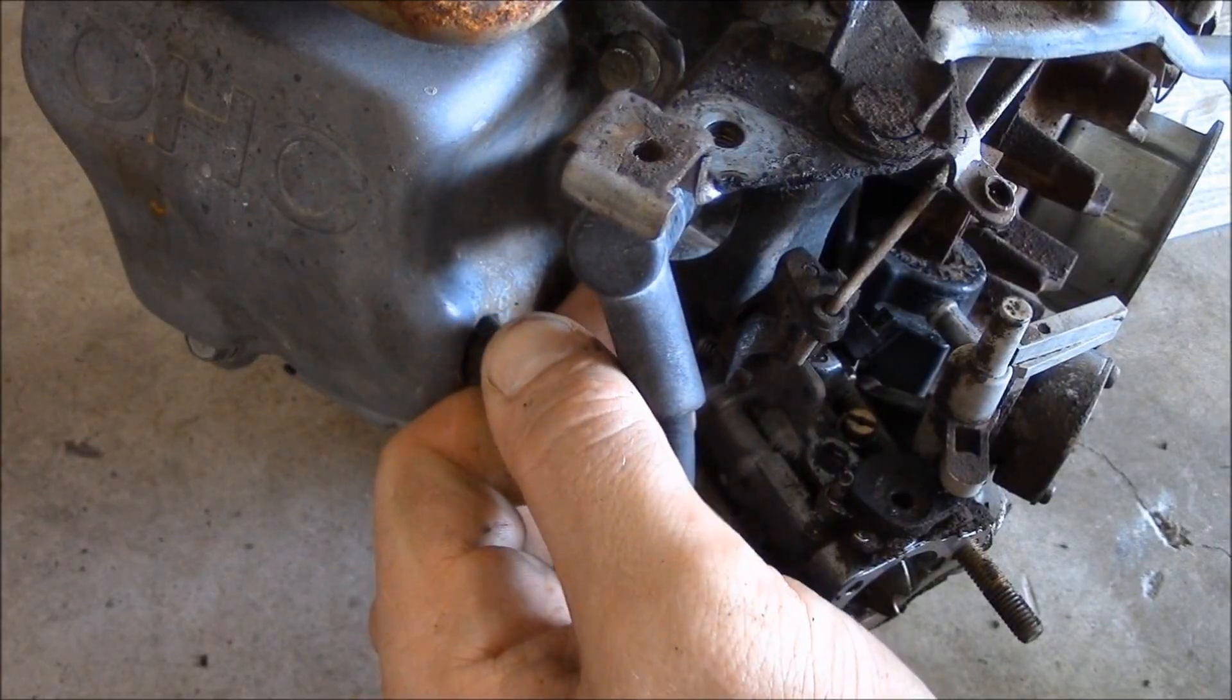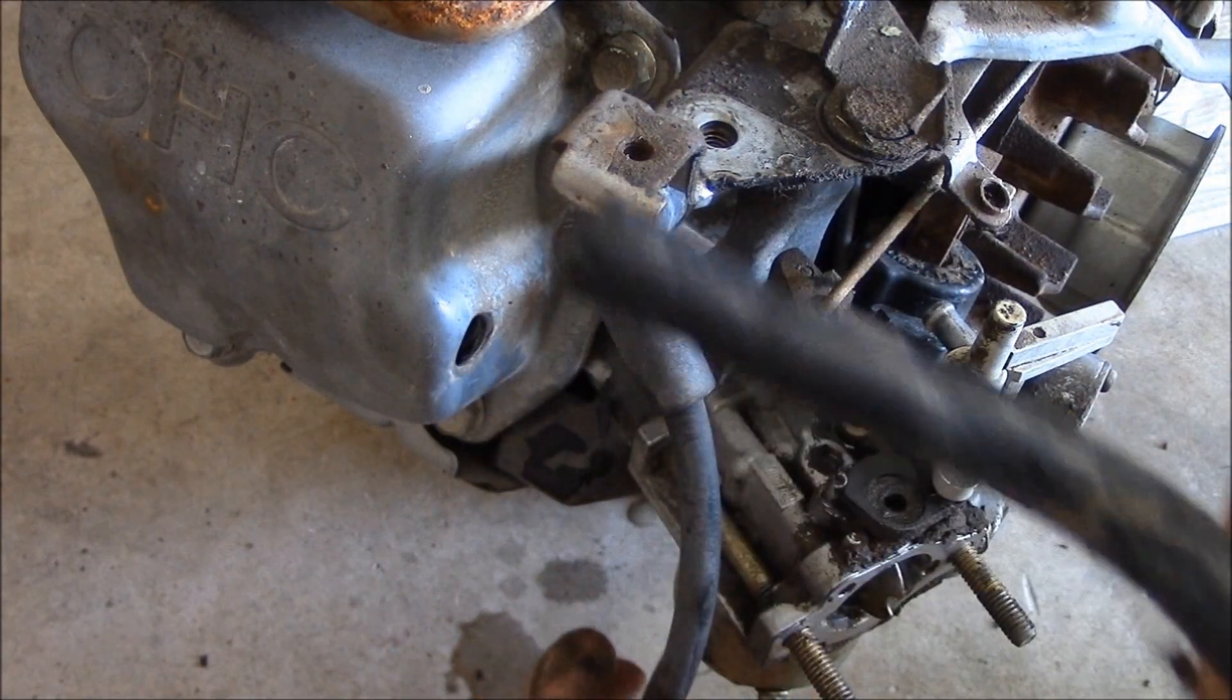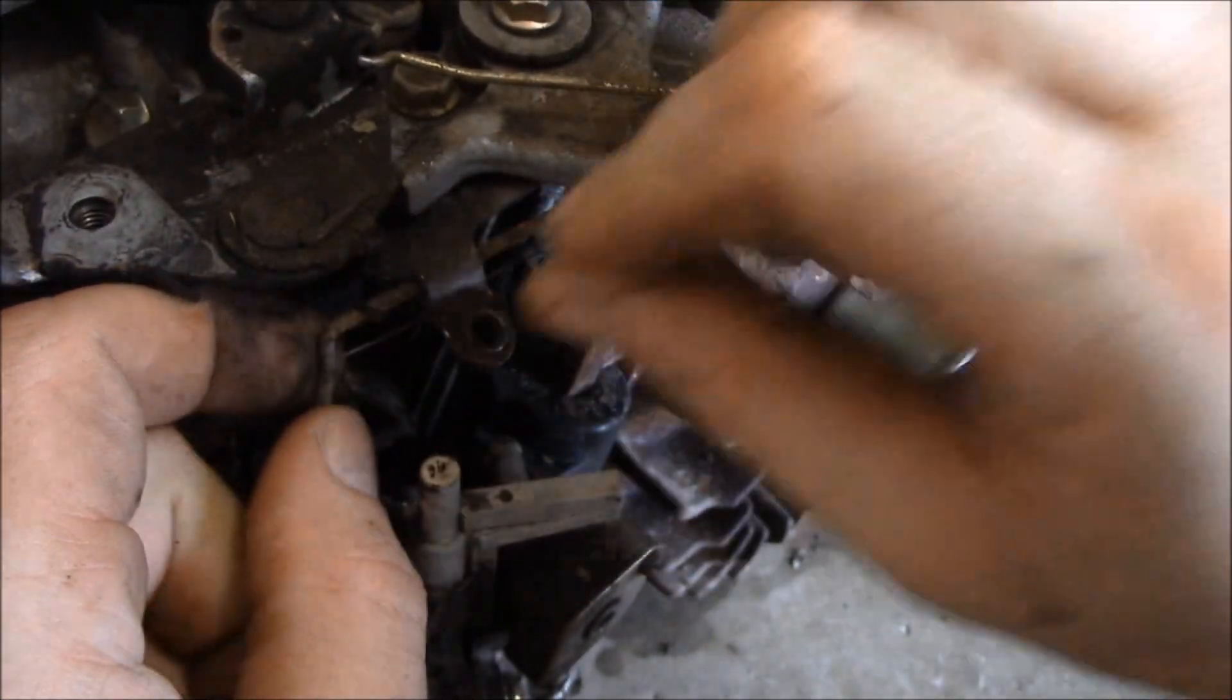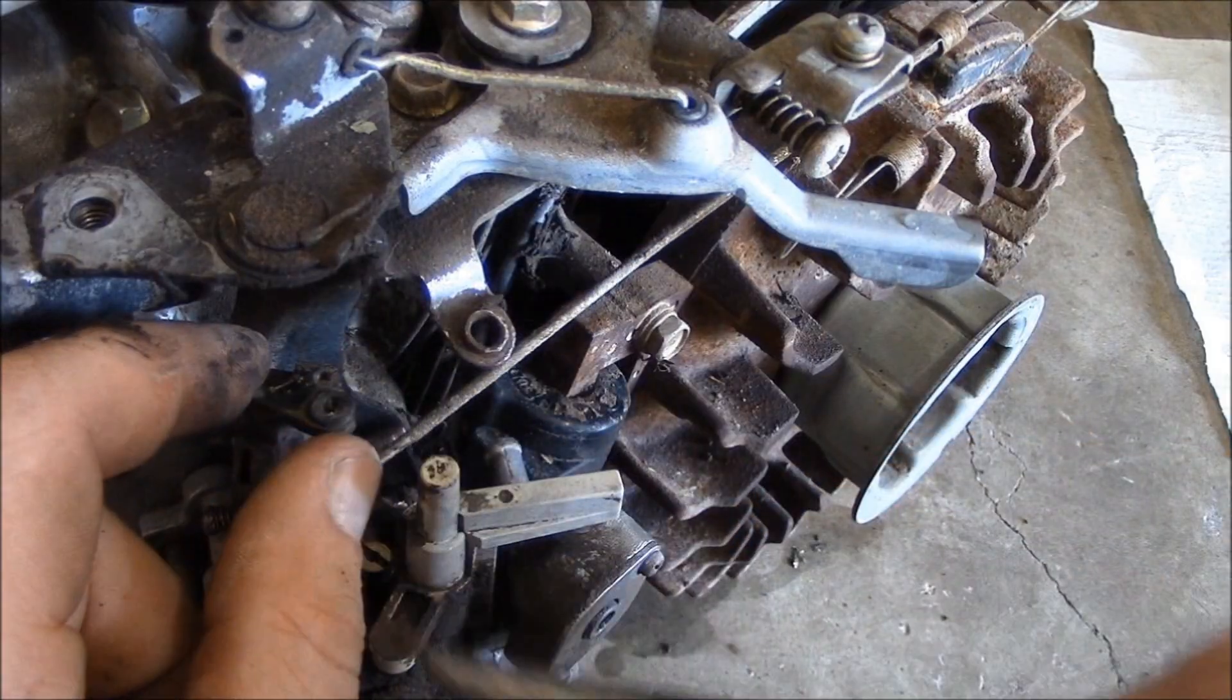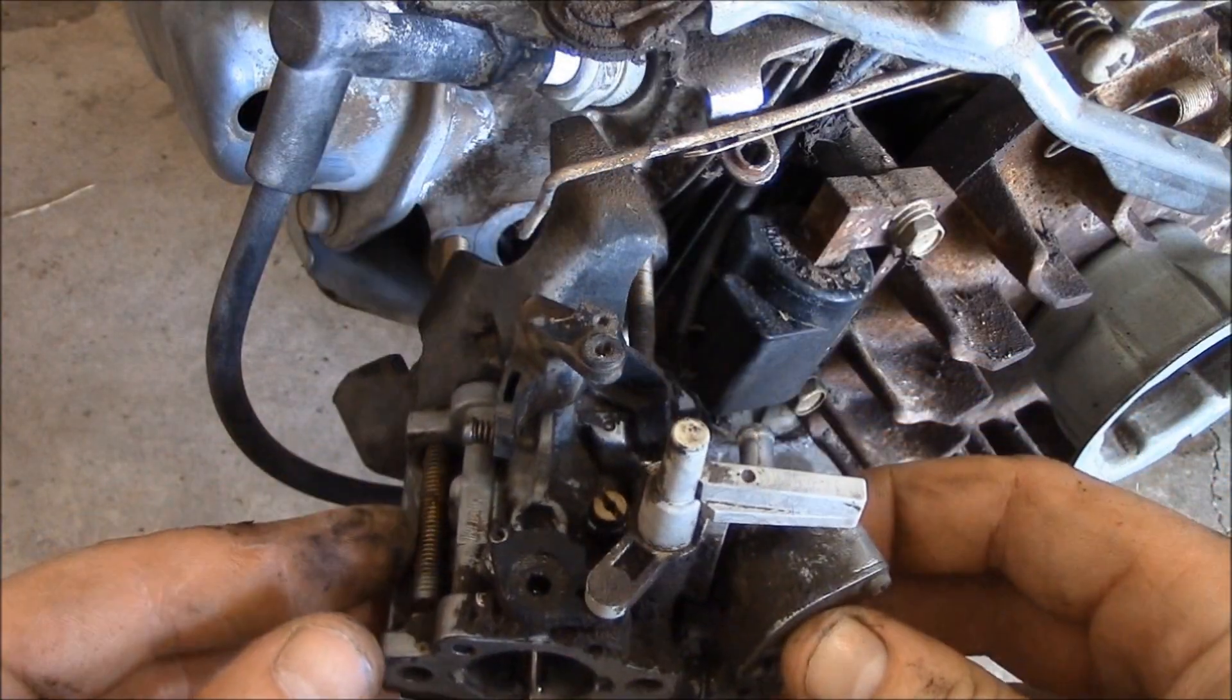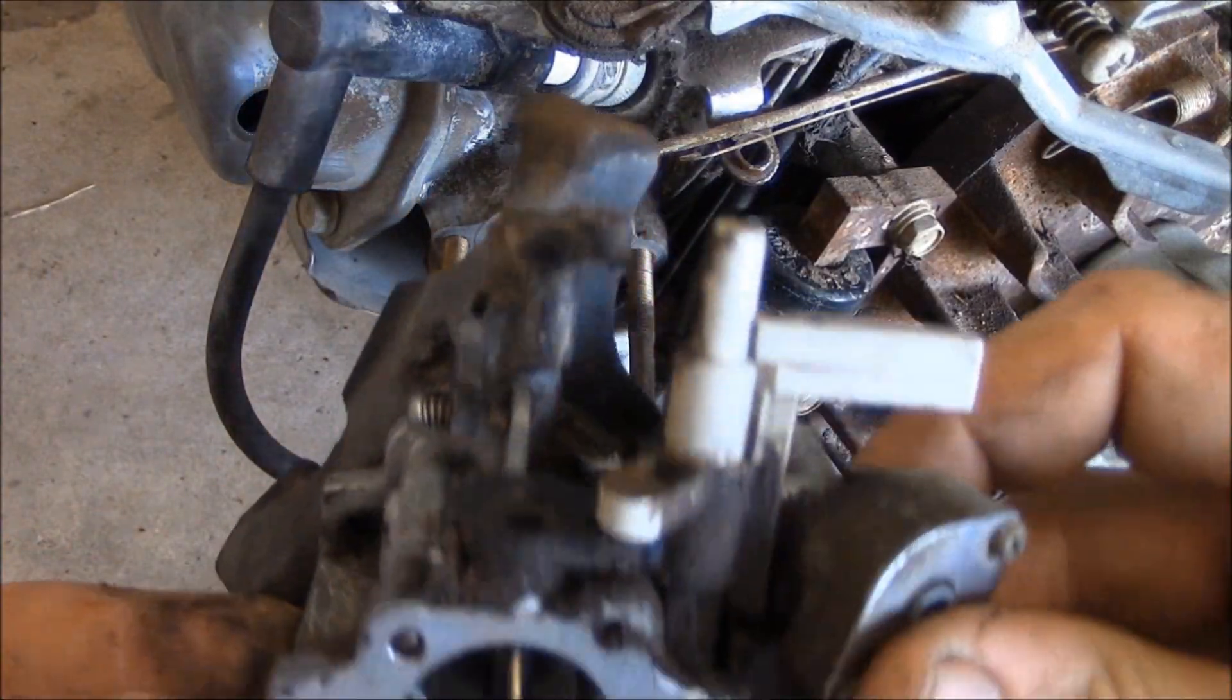These are the throttle linkages. You want to make sure those are all good. That's the breather tube. You want to clean that out as well. And then you want to remove the linkages from the throttle butterfly. There's usually just two, a little spring and a little rod, and your carburetor slides right off.